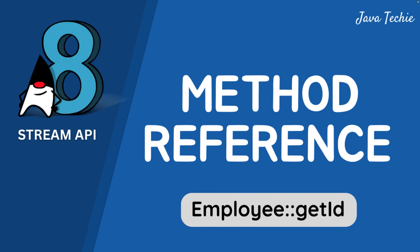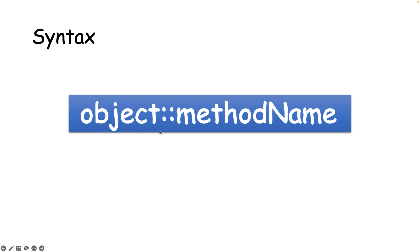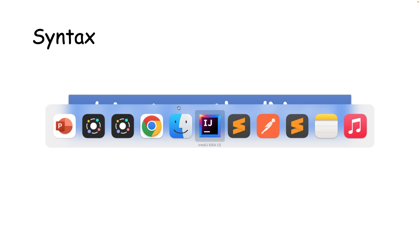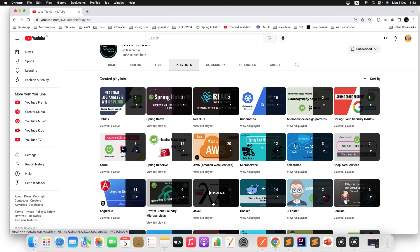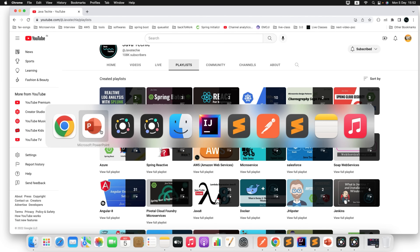Method references are a special type of lambda expression that execute only one method. If you observe the general syntax of a method reference, it looks something like this: object, then double colon, then method name. You need to understand lambda expressions first. If you are familiar with lambda expressions, let's move forward. If not, please check out my Java 8 playlist on my YouTube channel.